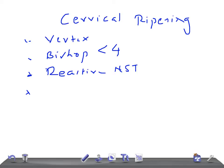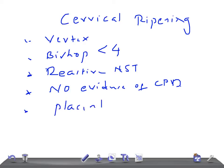And there should be no evidence of CPD. And there should not be what you call placenta previa. So these are the important conditions that should be fulfilled before cervical ripening.